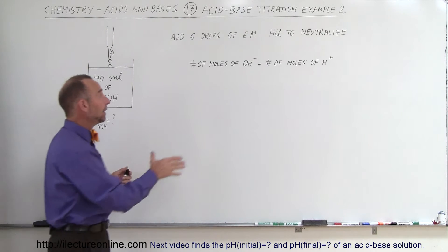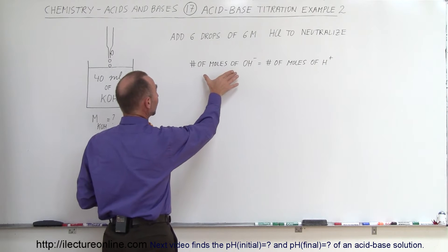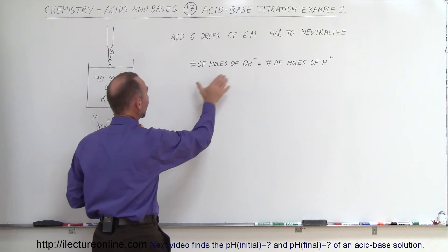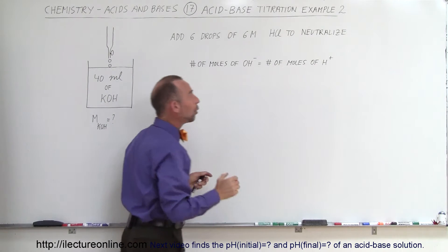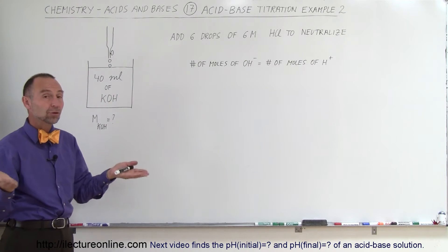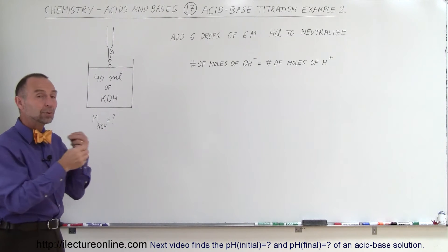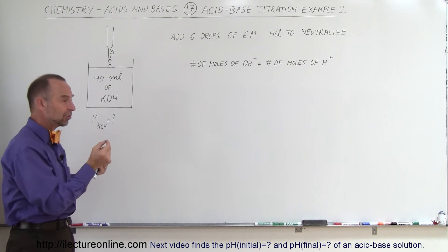The way we do that is we keep track of the number of moles of the hydroxide ion that was in there, setting it equal to the number of moles of hydrogen ion that we added. When we get to the neutralization point, there will be an equal number of hydroxide ions as hydrogen ions.